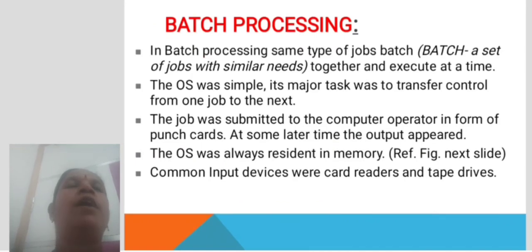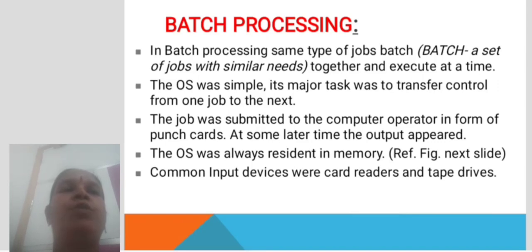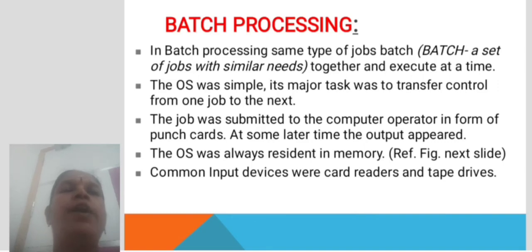Batch Processing. In batch processing, the same type of jobs are batched together — a set of jobs with similar needs — and executed at a time. The OS was simple; its major task was to transfer control from one job to the next. Jobs were submitted to the computer operator in the form of punch cards, and at some later time the output appeared. The OS was always resident in memory. Common input devices were card readers and tape drives.